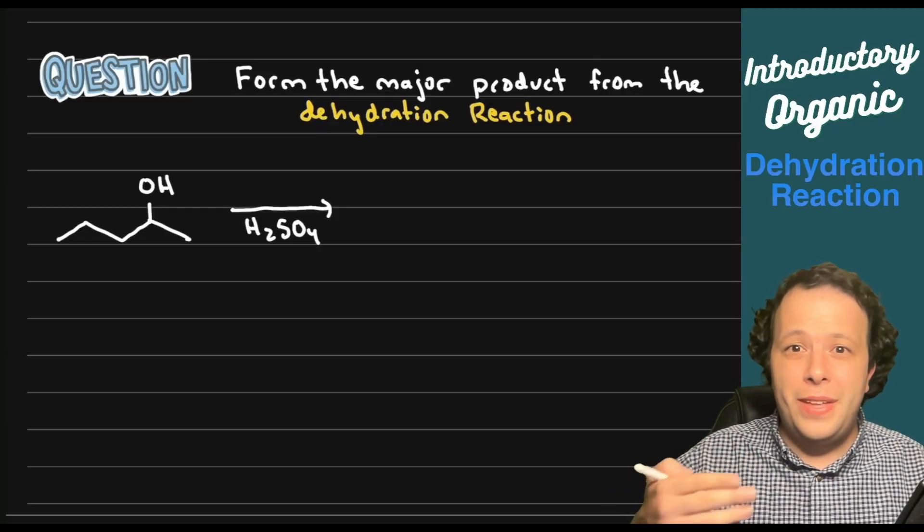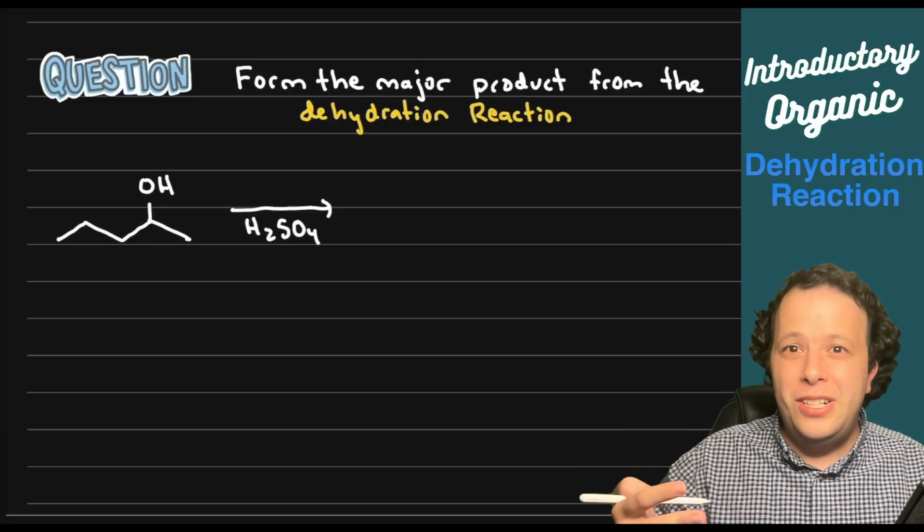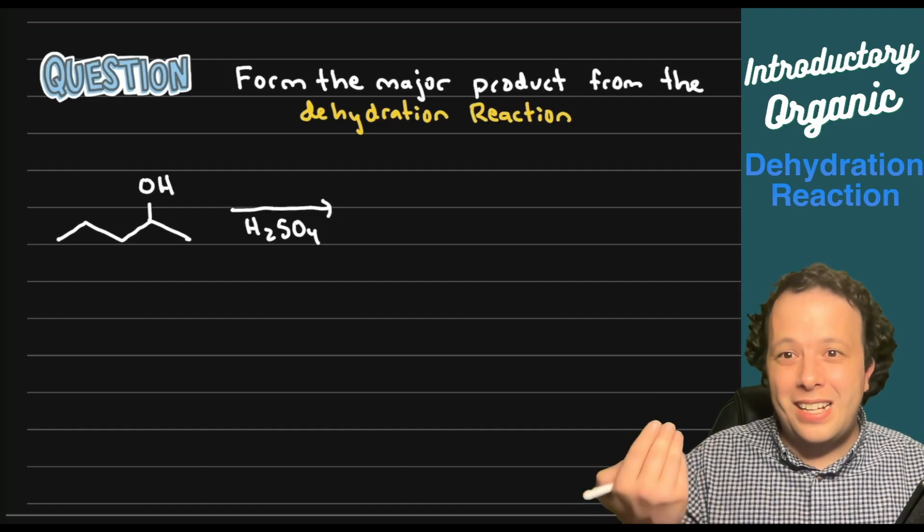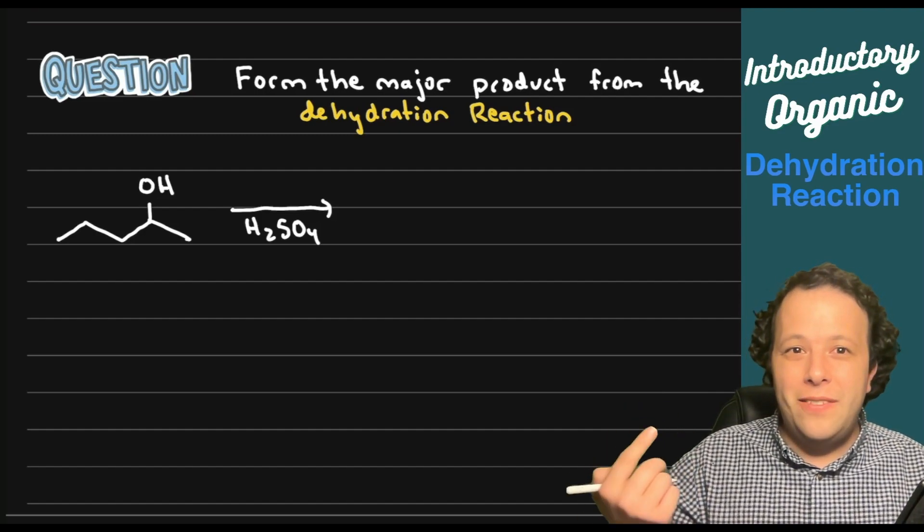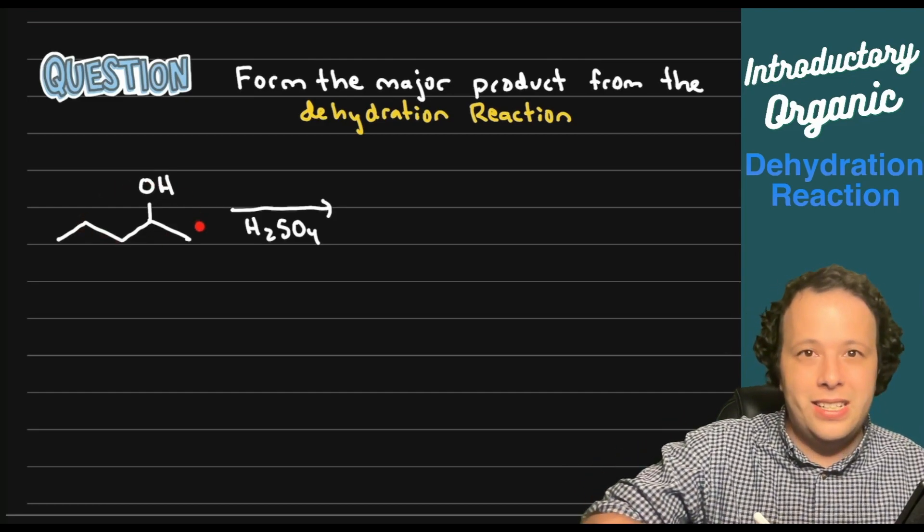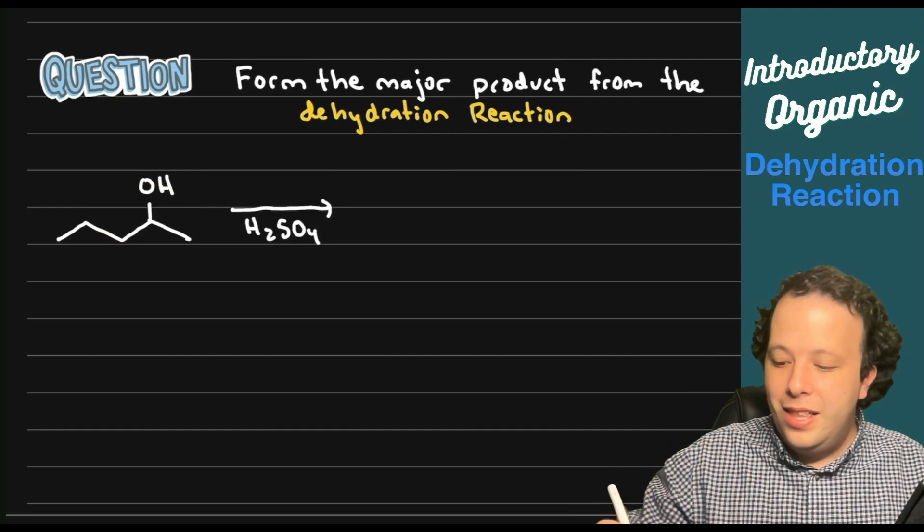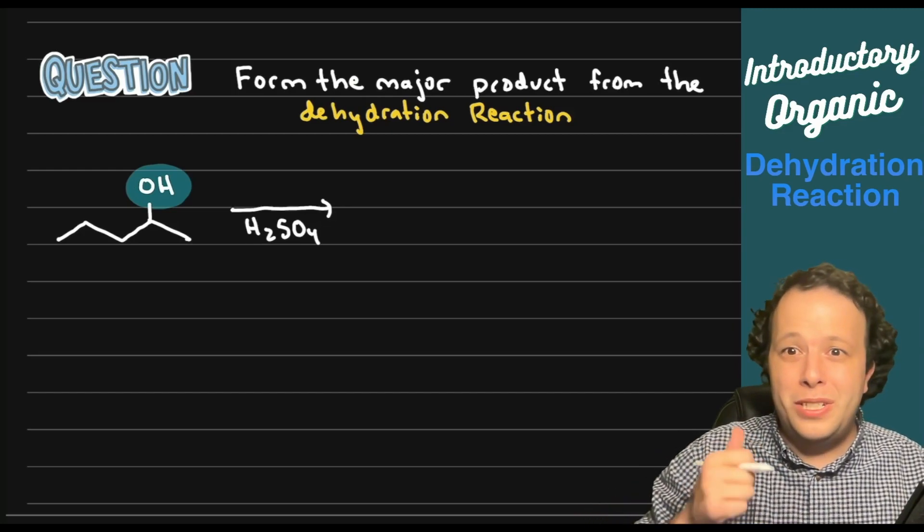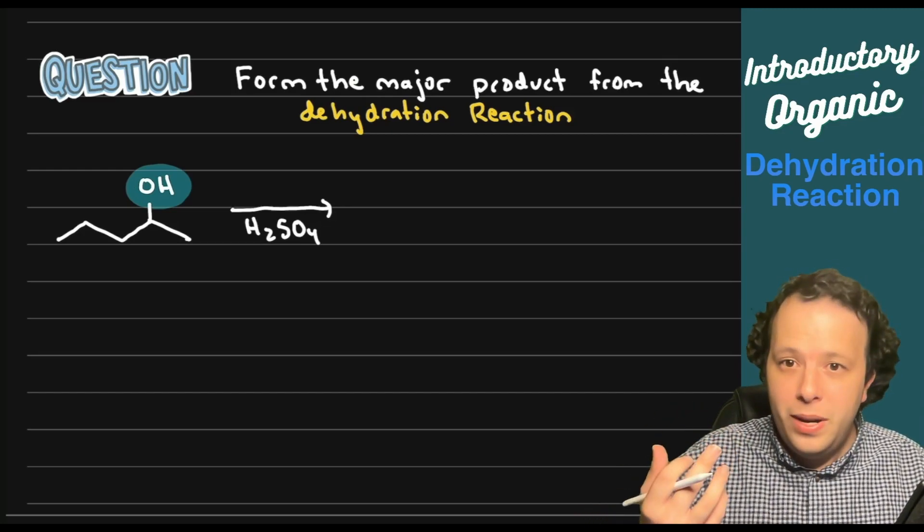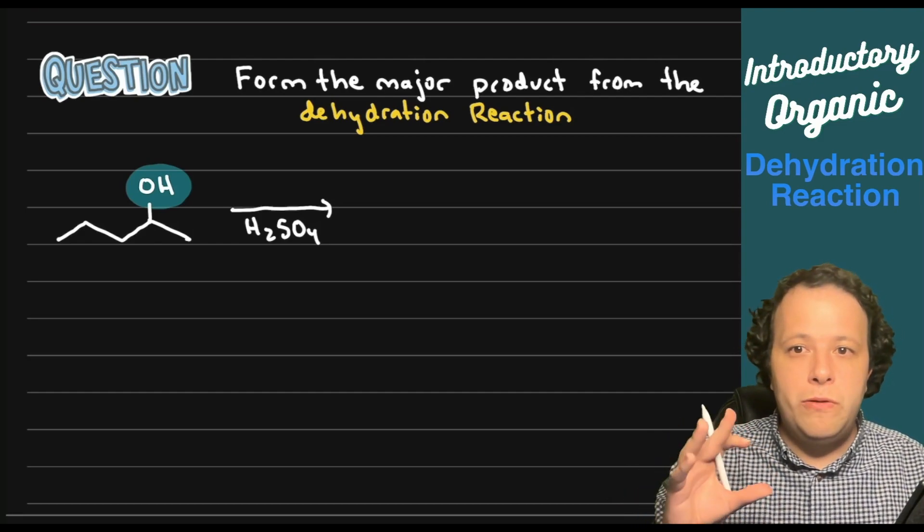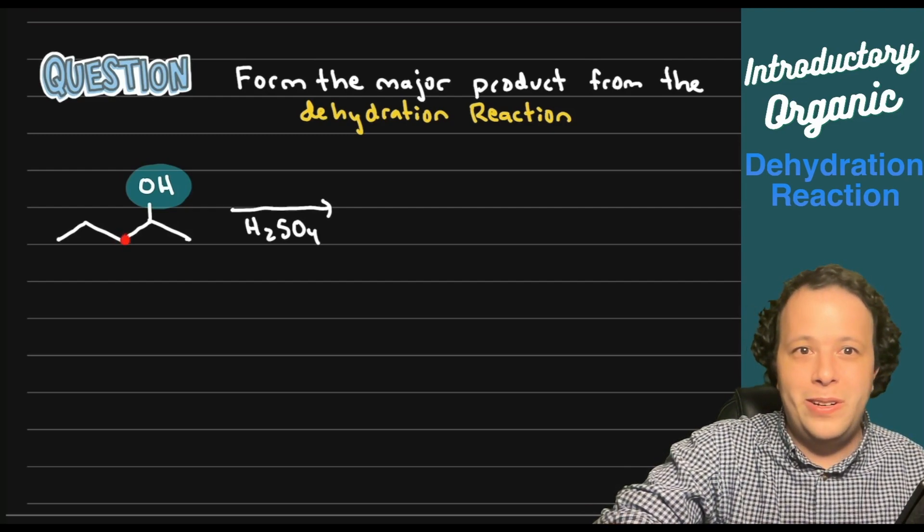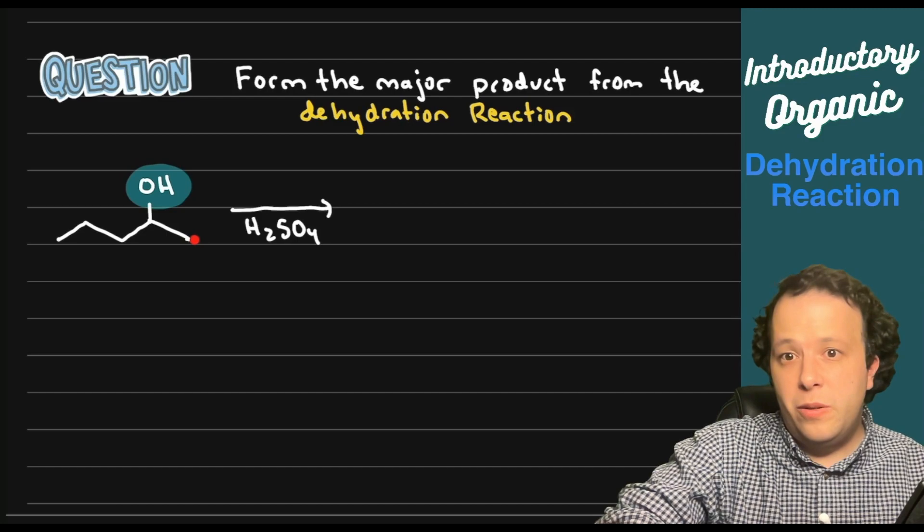The one really common problem that you're given is form the major product from the dehydration reaction. And when you're looking at this you're like oh man what exactly do I have to do? So when we have this general reaction we are always given some kind of reactant. One thing you can remember well our goal is to form water so we're going to be taking away an OH. Now the question is where do we remove the hydrogen from? Because you could remove it from the carbon on its left or the carbon on its right.